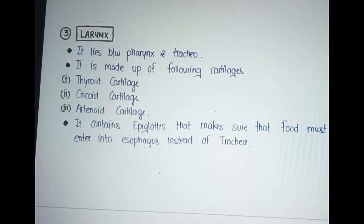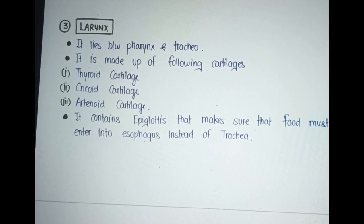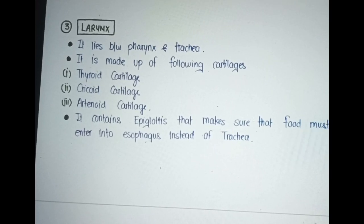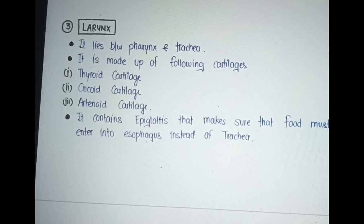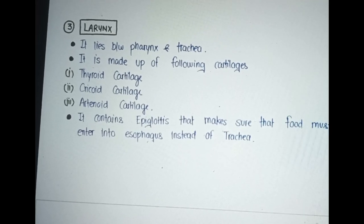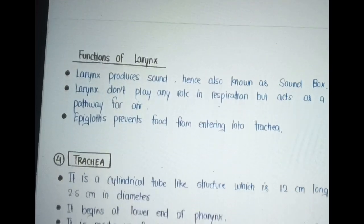Functions of pharynx: It helps in movement of food to the esophagus. The pharynx amplifies the sound produced by the larynx. Lymphoid tissues present in the pharynx act as a first-line defense against foreign pathogens. It is the pathway for air, food, and liquid.